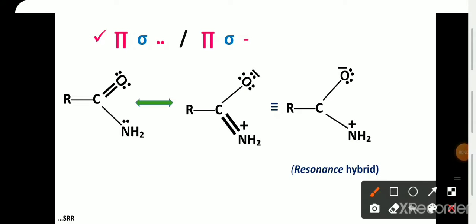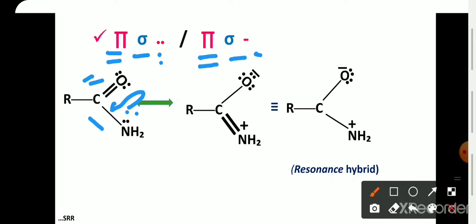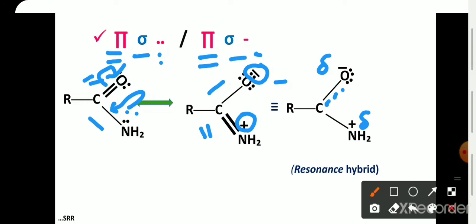The remaining conjugation conditions are pi-sigma-lone pair and pi-sigma-negative charge. For the pi-sigma-lone pair condition, the lone pair on nitrogen is donated and the bond shifts onto oxygen — as a result, oxygen gains a negative charge and nitrogen gains a positive charge. For the pi-sigma-negative charge condition, oxygen gains a partial negative charge and nitrogen gains a partial positive charge. The resonance hybrid is an average of both of these resonating structures.